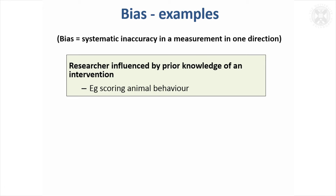Another thing that can introduce bias is being influenced by prior knowledge of the intervention. Particularly in animal behaviour studies, if there are two groups and you're assessing how they're behaving in their cages and you know what's happened to each group, you might be more likely to observe higher or lower results in one group than another. That also applies when you come to analyse the data — even if it's somebody else analysing it, knowing what the different interventions were might introduce a bias in how you're interpreting the results.